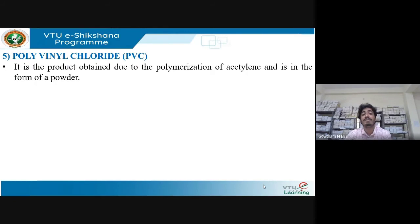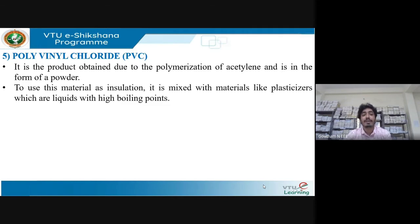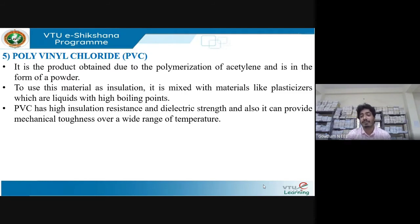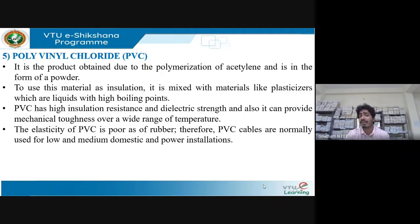PVC — polyvinyl chloride — is formed by polymerization of acetylene. It is an organic compound in powder form. When used as an insulator, it is mixed with plasticizers, which are liquids with high boiling points. PVC has high insulation resistance, high dielectric strength, and can provide mechanical toughness over a wide range of temperatures. Its elasticity is poor compared to rubber. It is used for low, medium, domestic, and power insulation applications.